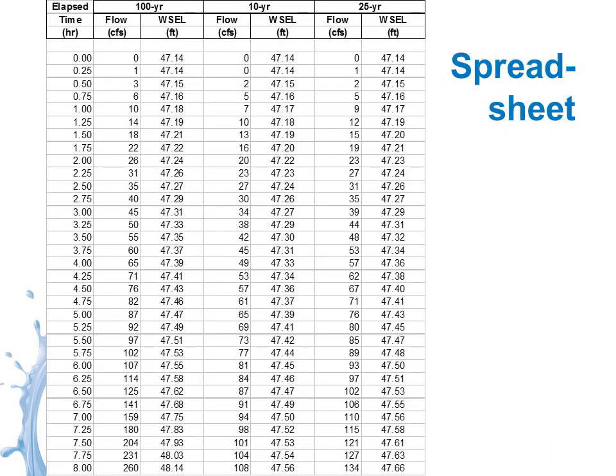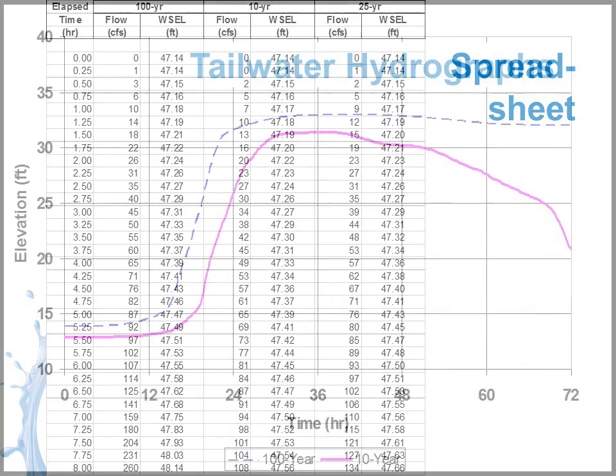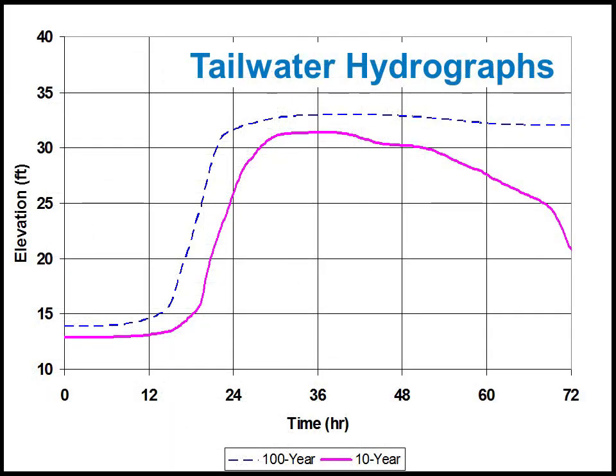You can put this in a spreadsheet. You've got flow and water surface elevation from your rating curve, and then time and flow from your runoff hydrograph in the stream. Tailwater hydrographs in flat areas stay high for a very long time — obviously a very flat, maybe undeveloped area with really wide floodplains.